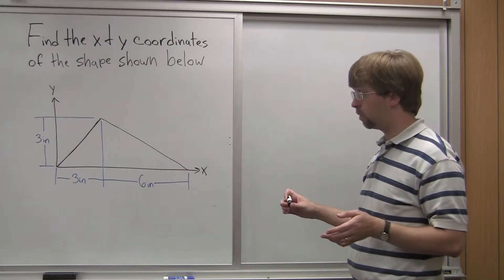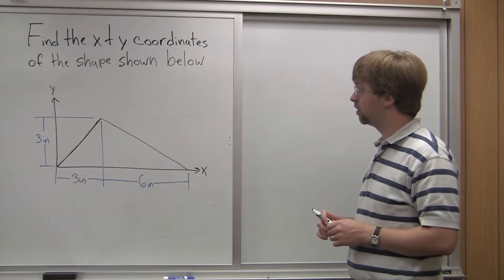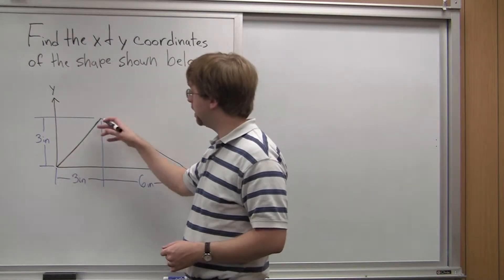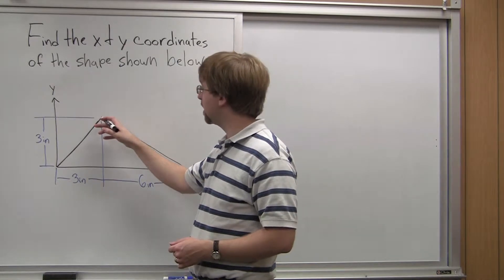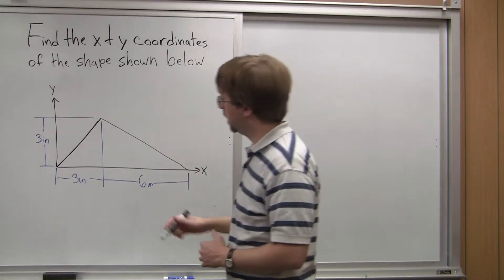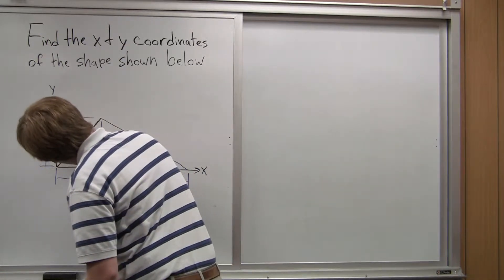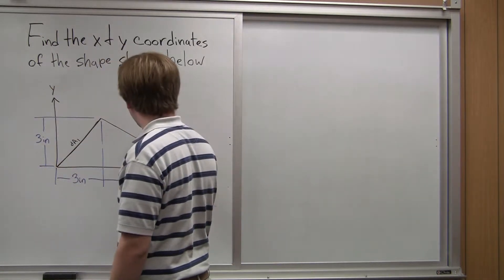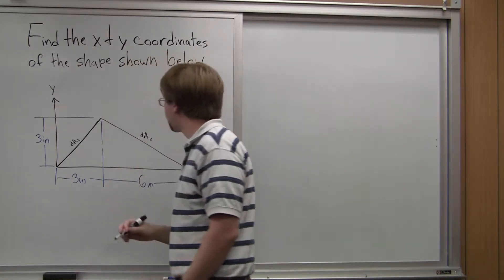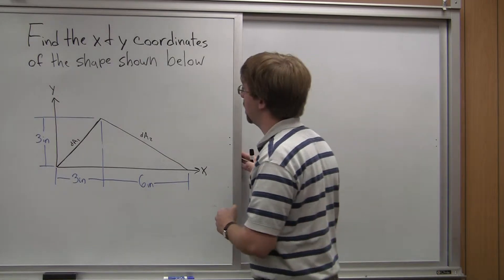The first thing we're going to notice is this is a discontinuous function. We're going to need one line to describe the height for the first part — that first dA — and then another line to describe the height for the second part, the second dA. We call these dA1 and dA2 in the x direction. So let's go ahead and set that up.